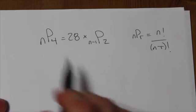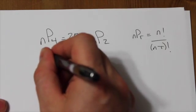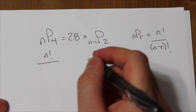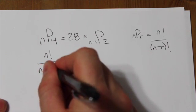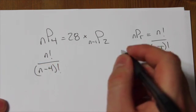So here, nP4 is going to be the left side factorial over left side minus right side factorial.